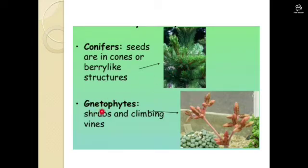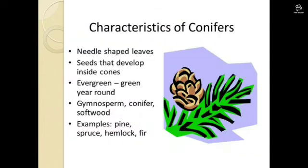Conifers produce cone-like structures and berry-like structures. Here I will show the gnetophyte structure climbing the vines. Characters of conifers: they have needle-shaped leaves, they produce seeds on their cones, and they are evergreen. Examples are spruce, pine, hemlock, and fir.